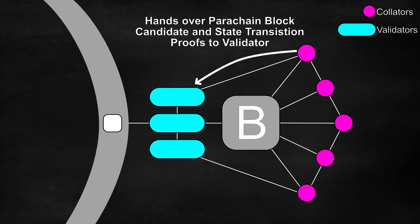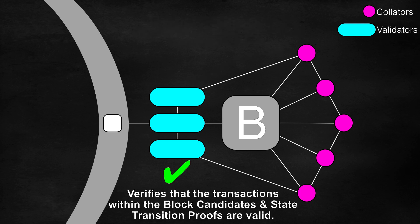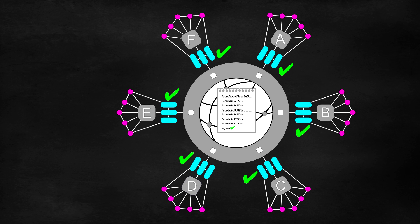So validators verify that the information that they have received from collators in the parachain block candidates are valid. Secondly, they participate in the consensus voting mechanism to produce the relay chain blocks based on the validity statements from other validators regarding parachain block candidates.